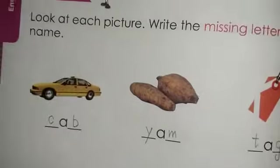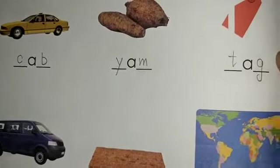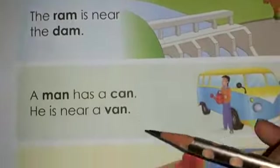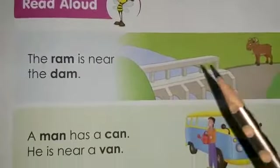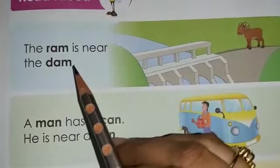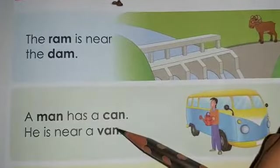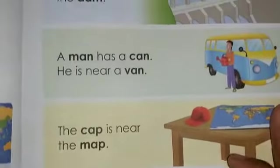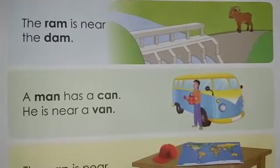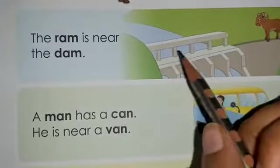So, students, in the same way, you have to complete your work given on page number 26. Now, after we have studied page number 26, please come up to the next page, which is page number 27. On page number 27, you have been given an exercise. This is a reading exercise. It's written: read aloud. What do you have to do in this? We are going to read these sentences and see the pictures also. As you can see, there are AM words, AN words, AP words, AG words, AT words — all the words we have studied till now.